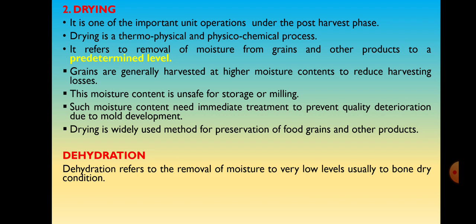The next class is Drying and Dehydration. Drying is one of the important unit operations. The definition of Drying is the removal of moisture content to a predetermined level. In a drying operation, we set a particular level and up to that level we remove the water from the substance or any commodity. It is a thermophysical and physico-chemical process, or we can also say that it is a heat and mass transfer process.